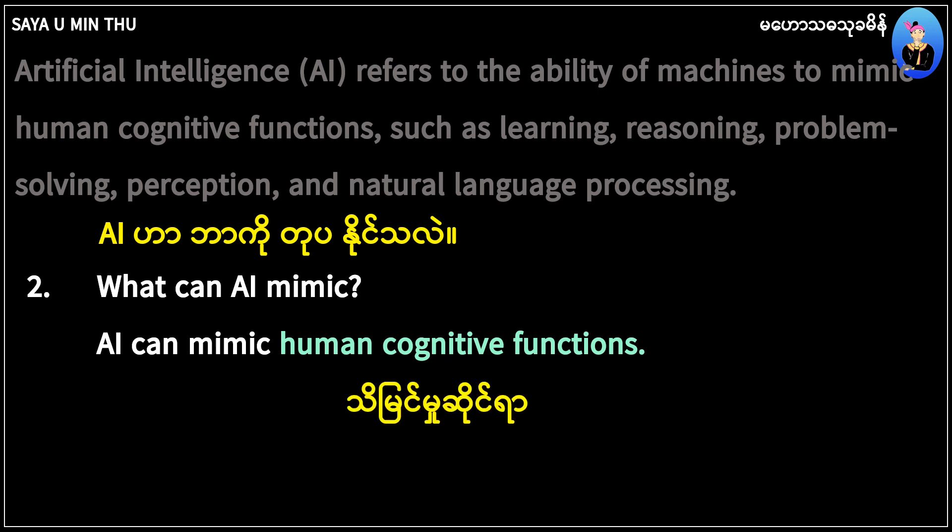Cognitive is spelled C-O-G... N-I-T... T-I-V-E. Cognitive is an adjective in the phrase 'human cognitive functions.'